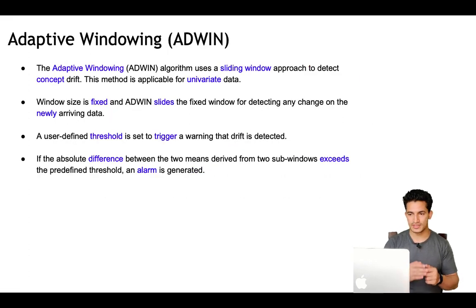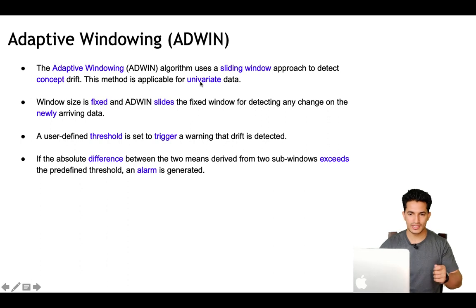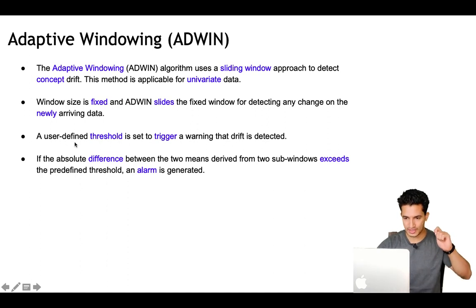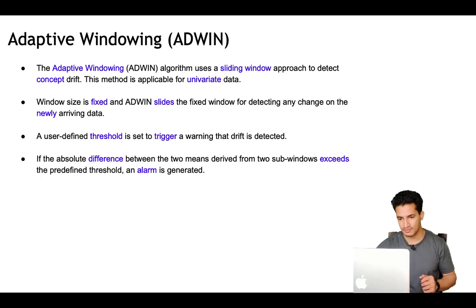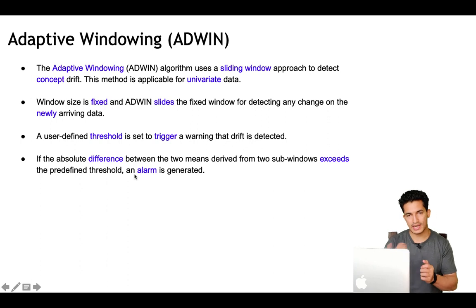Another method is adaptive windowing, known as ADWIN. The adaptive windowing algorithm uses a sliding window approach to detect concept drift. The method is applicable for univariate data, so you can use it for the target variable to detect concept drift. The window size is fixed and ADWIN slides the fixed-size window to detect any change in new real-time data. A user-defined threshold is set, and if the absolute difference between the means of the two sub-windows exceeds the predefined threshold, an alarm is generated indicating drift has occurred.